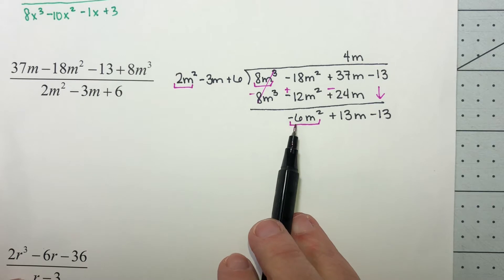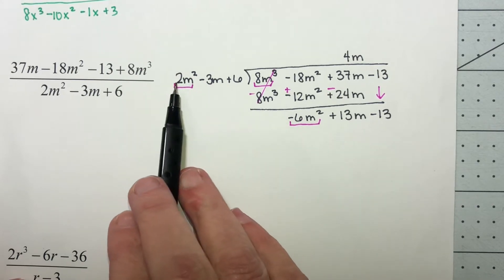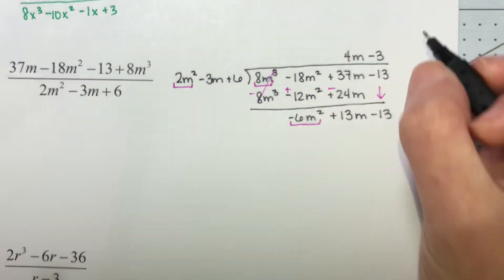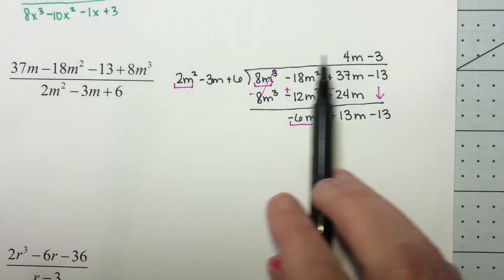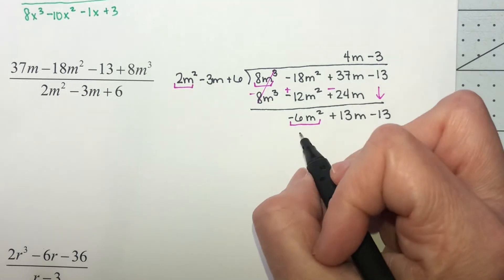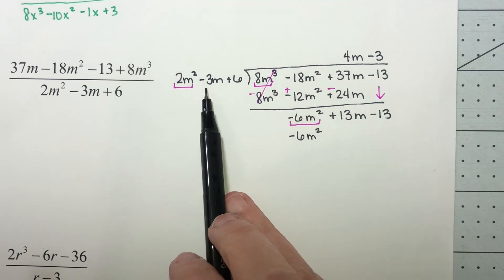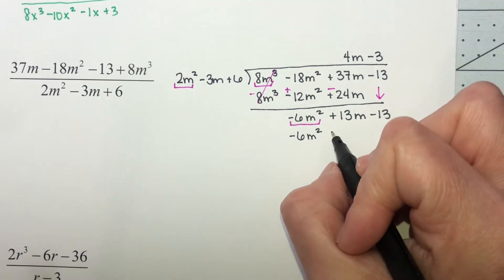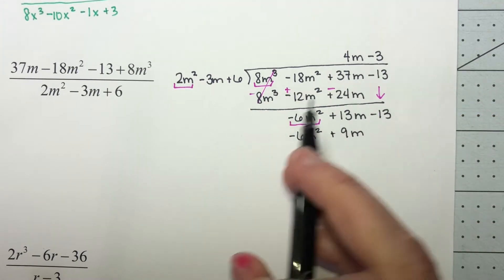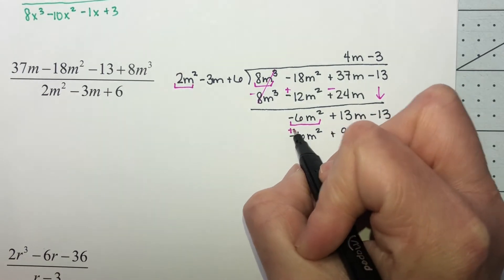2m squared needs to become negative 6m squared. The m squared is already correct, so I need to change this 2 into a negative 6, meaning I multiply by negative 3. Take negative 3 and distribute it all the way through. Negative 3 times 2m squared is negative 6m squared. Negative 3 times negative 3m is positive 9m. Negative 3 times 6 is negative 18. Change all of the signs.